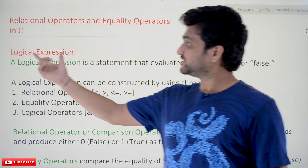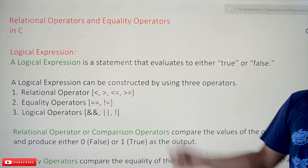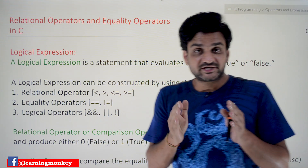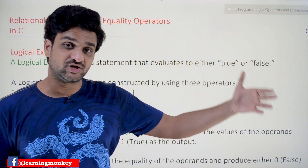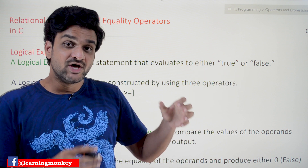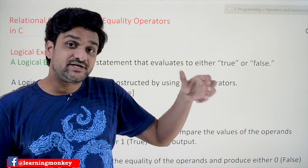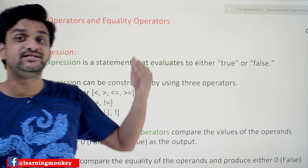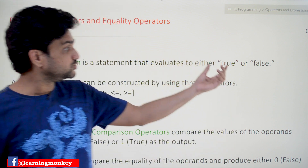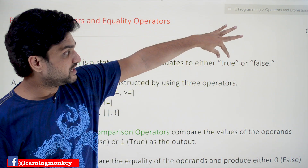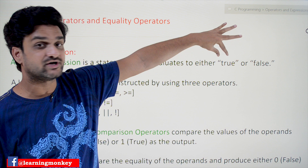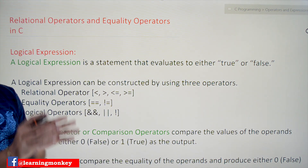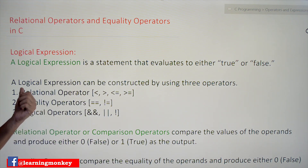Before covering relational and equality operators, let's understand what is meant by a logical expression. A logical expression is a statement that evaluates to either true or false. After executing that expression, the output is evaluated as either 0 or 1 — where 0 means false and 1 means true.